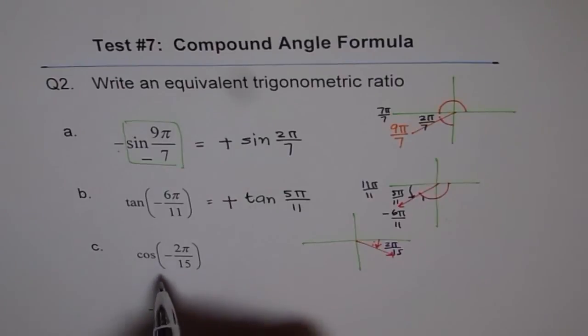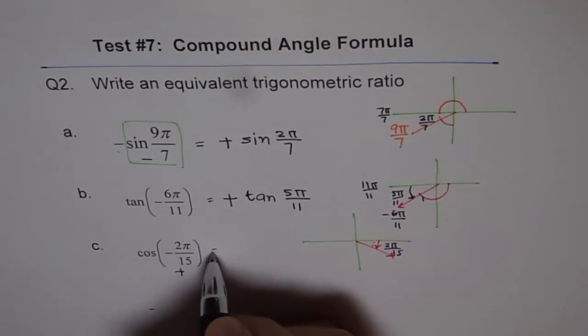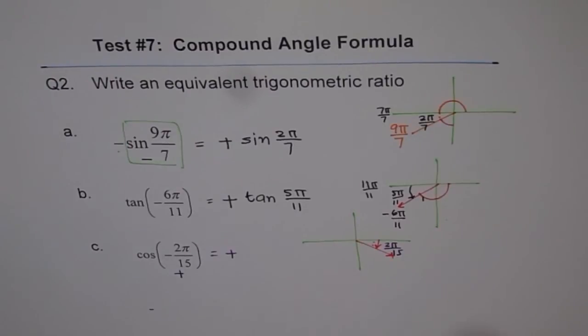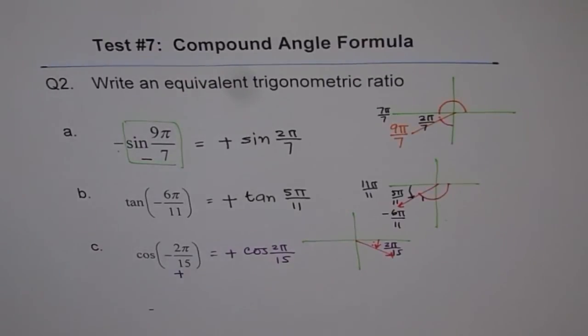As far as the sign is concerned, cosine is positive here. So you are expecting a positive answer. Acute angle is 2π by 15. So you could write this as cos of 2π over 15. That is the way to get all your answers of equivalent trigonometric ratios. I hope that makes things absolutely clear. Thank you.